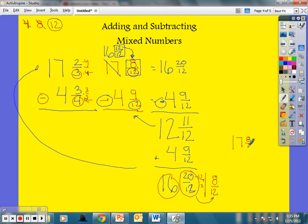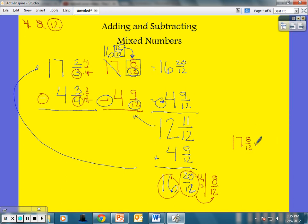But wait, that's still not 2/3. I can simplify 8/12. I can divide both by their greatest common factor which is 4. So now I have 17. Eight divided by four is two, 12 divided by four is three. And look at that. That works.